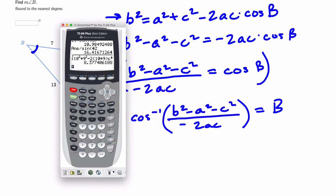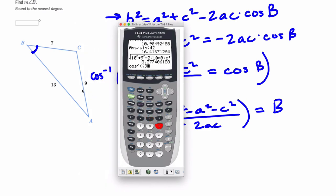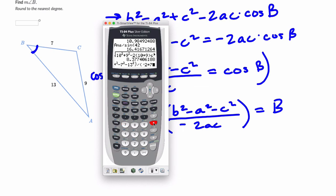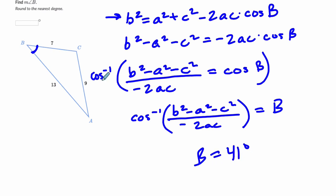Let's plug it into the calculator. Press second cosine, open parentheses for the numerator: 9 squared minus 7 squared minus 13 squared, close parentheses, divided by parentheses negative 2 times 7 times 13, close parentheses, close the whole thing, and hit enter. They want it to the nearest degree, so it's 41 degrees. So angle B is about 41 degrees.